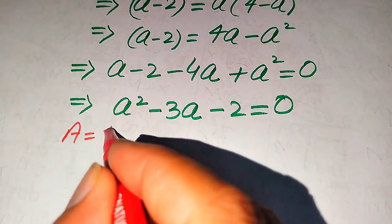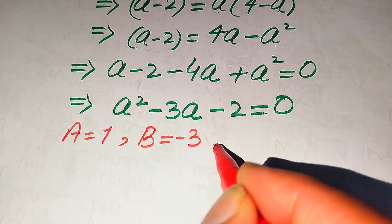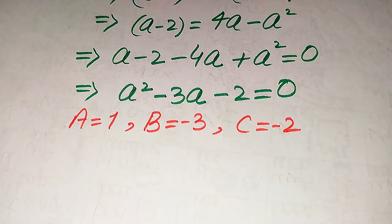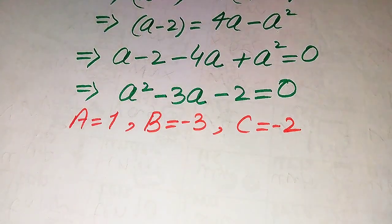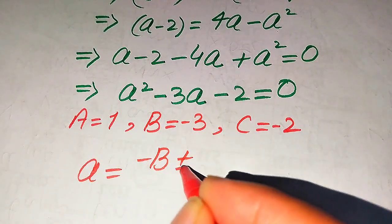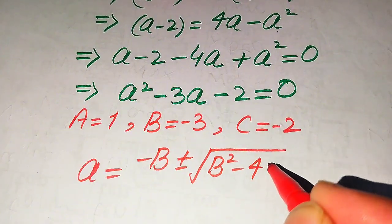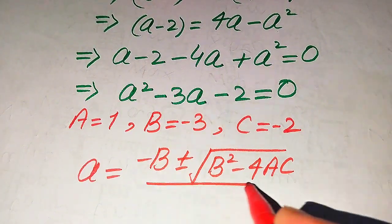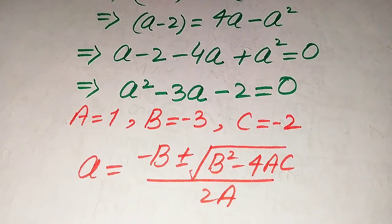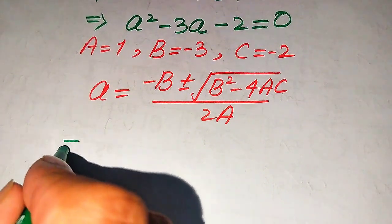First we write the coefficients of the equation. The coefficients are: a equals 1, b equals minus 3, and c equals minus 2. The quadratic formula is: a equals negative b plus or minus square root of (b squared minus 4ac), divided by 2a.